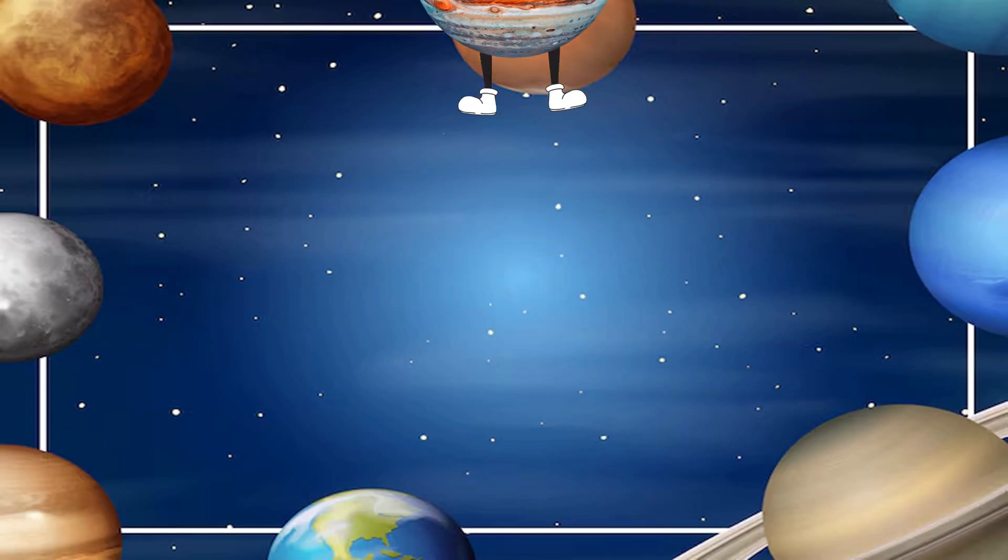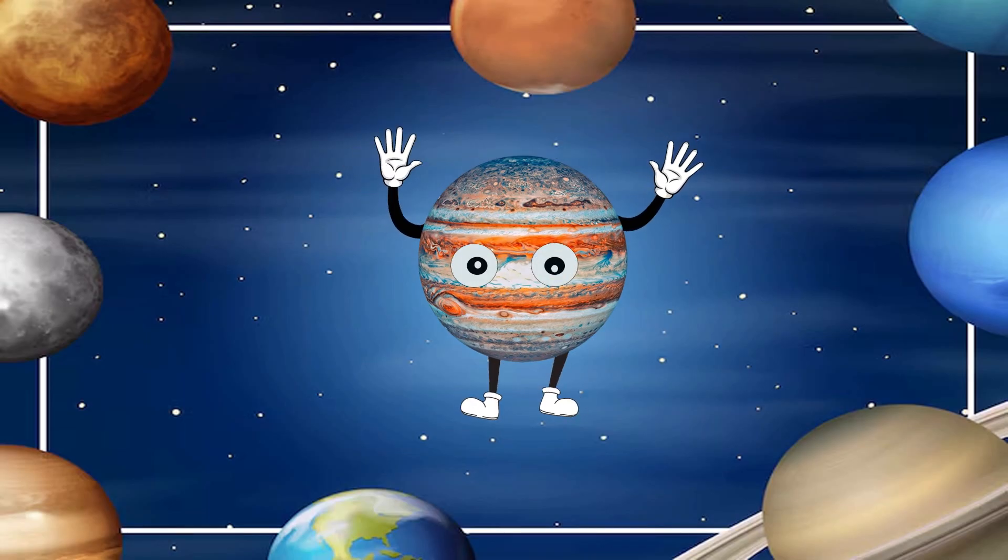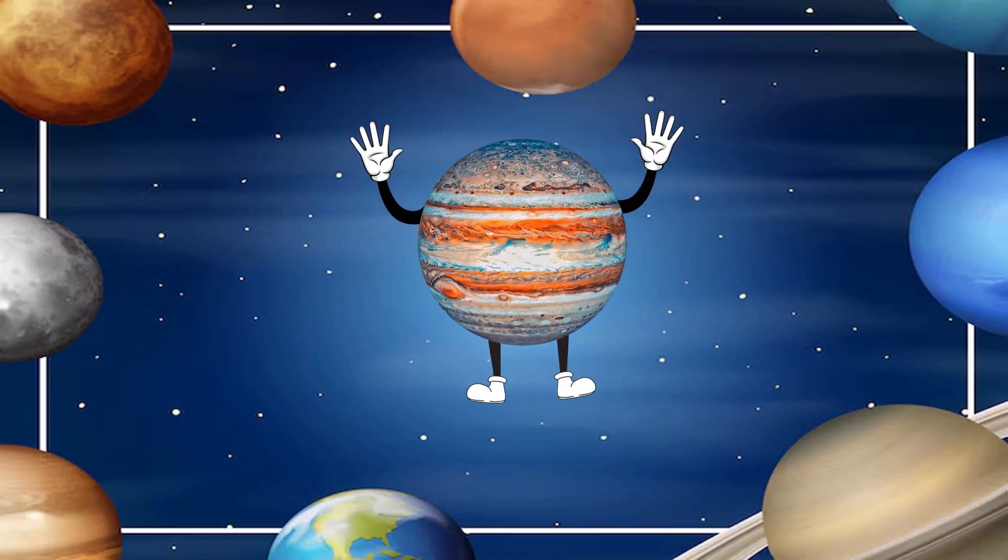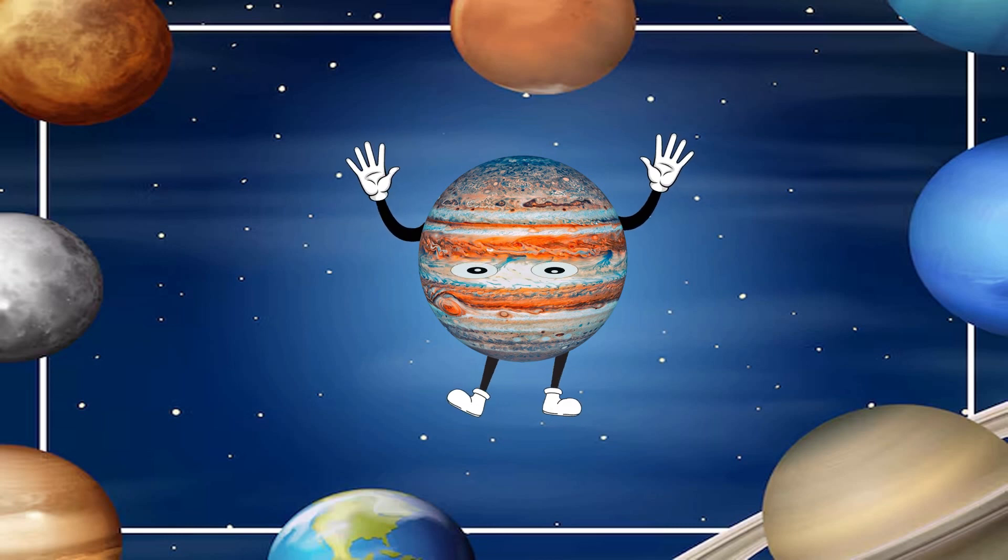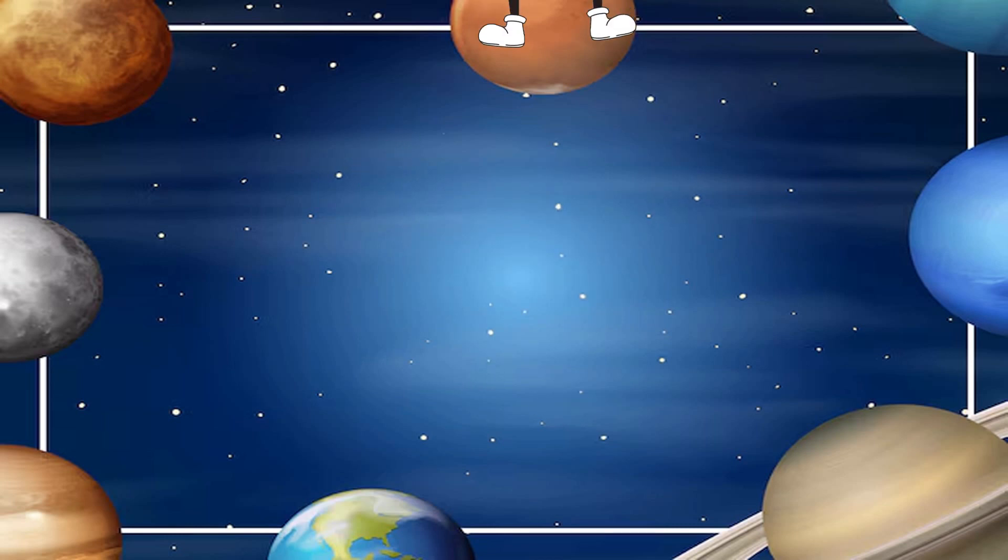My name is Jupiter, I am covered in clouds, I'm the fifth planet from the sun. My giant red spot is a raging storm, as for size I'm the biggest one.